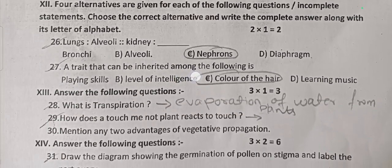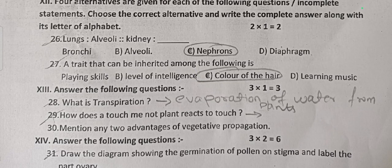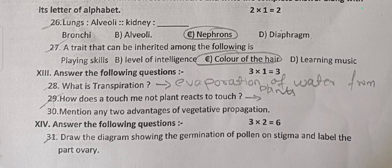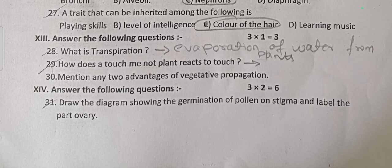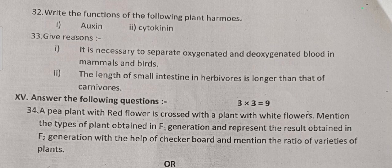Part C — Biology. Two multiple choice questions: lungs — alveoli; kidney — nephron, answer is nephron. A trait that can be inherited among the following is colour of hair. Three one-mark questions: What is transpiration? — evaporation of water from plants is called transpiration. How does the touch-me-not plant react to touch? — when touched, the stimulus travels to the leaves and the leaves close, then open after some time. Mention any two advantages of vegetative propagation. Draw a diagram showing germination of pollen on stigma and label the ovary. Write the functions of plant hormones auxin and cytokinin.